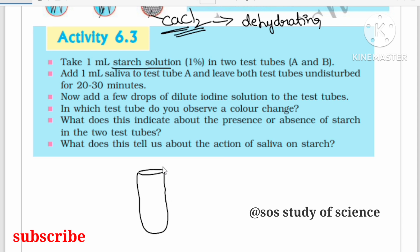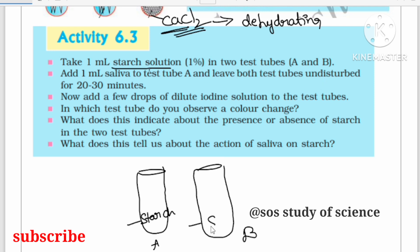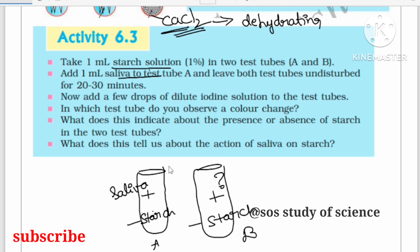Take two test tubes — test tube A and test tube B. Add 1 ml of starch to both test tube A and test tube B. Then, add 1 ml of saliva to test tube A only, and leave both test tubes undisturbed for 20 to 30 minutes.